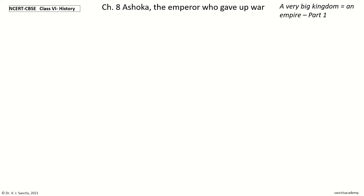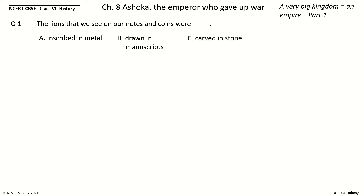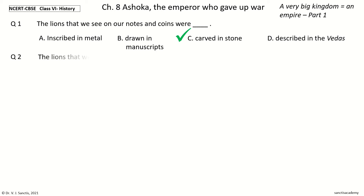Question 1: The lions that we see on our notes and coins were — dash. The options are: inscribed in metal, drawn in manuscripts, carved in stone, described in the Vedas. The answer is carved in stone. So the lions that we see on our notes and coins were carved in stone.